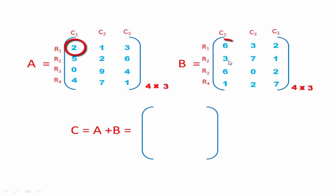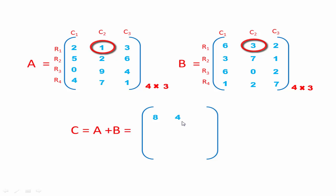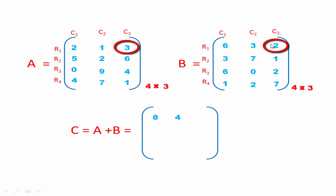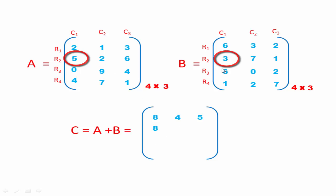Here first we add these two numbers. 2 plus 6 is 8, so write here 8. Then add these two numbers: 1 plus 3 is 4, so write here 4. We add the elements which are in the same position. The position of this number is first row and third column. Next we find a number in the second matrix which is in the first row and third column position — means this number. And now we add these two numbers: 3 plus 2 is 5, so write here 5. Next 5 plus 3 is 8, and next 2 plus 7 is 9. This procedure continues.